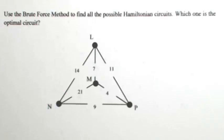Use the brute force method to find all the possible Hamiltonian circuits. Which one is the optimal circuit? When using the brute force method, we're going to list out every possibility and whichever one has the lowest cost on it, that would be the optimal circuit.